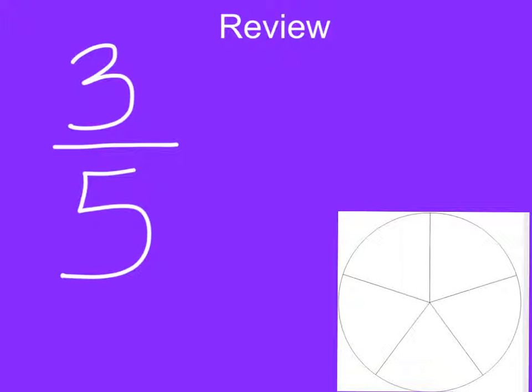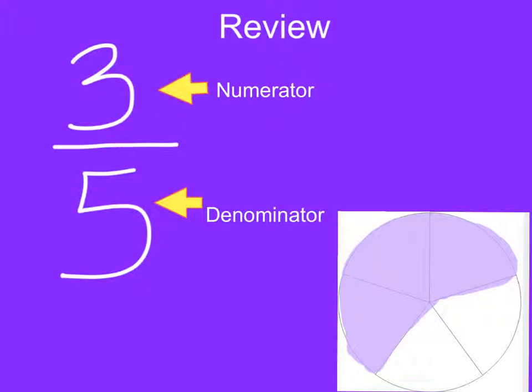Let's review what each number represents in a fraction. The top number is called the numerator. This represents the number of parts in a whole. The bottom number is called the denominator, which is the whole.